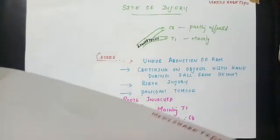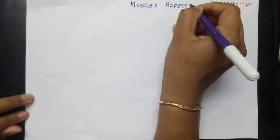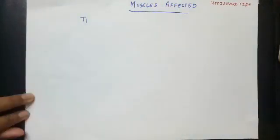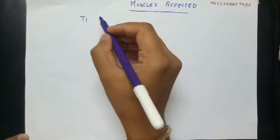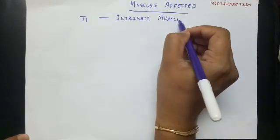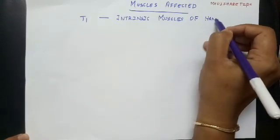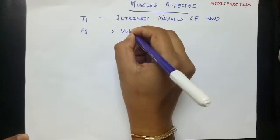Now let's see the muscles affected. As the T1 fibers are affected, the fibers passing from the T1 root to the median nerve and ulnar nerve are affected. As the ulnar nerve is affected, all the intrinsic muscles of the hand are paralyzed — these are the lumbricals and the interossei. And as the C8 root is affected, the ulnar flexors of the wrist and fingers are also affected.